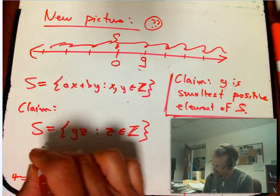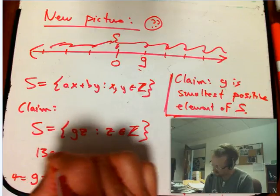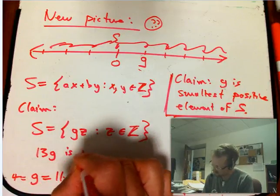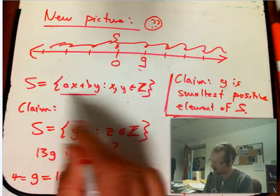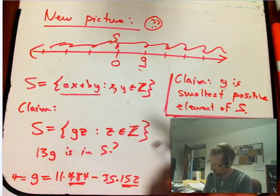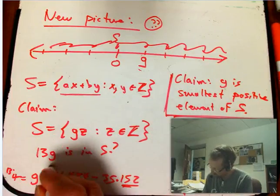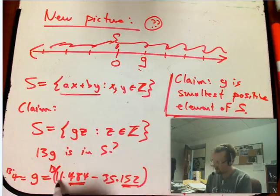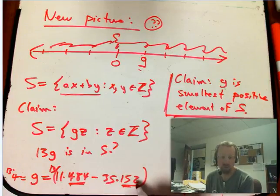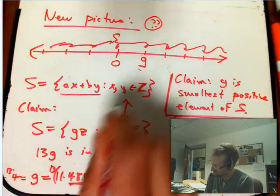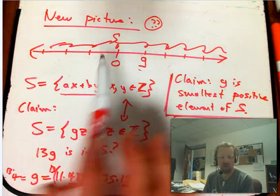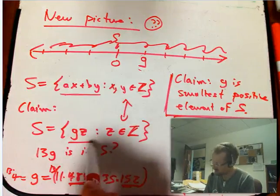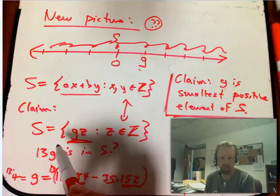So, for example, what if I want to know, is it really true that 13 times G is in S? Is that really true? Let's see. Just because it's 13 times G, does that really mean it can be expressed as a linear combination of 484 and 152? Absolutely. Just multiply both sides of this equation by 13. So it's going to have coefficients 13 times 11 in front of the 484, and 13 times 35 in front of the 152. So this is a very powerful statement, that instead of thinking of it as combinations of two separate numbers, where you have to think carefully about how they play off against each other, it's just really just multiples of one number, and that number is exactly the GCD.